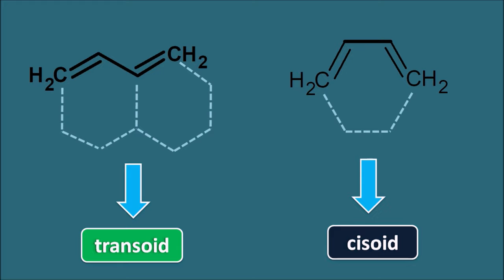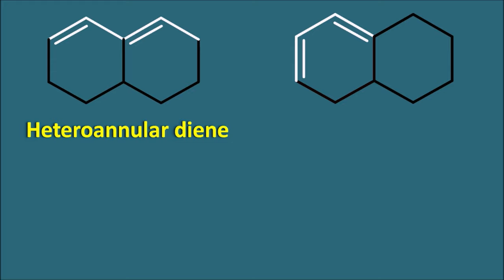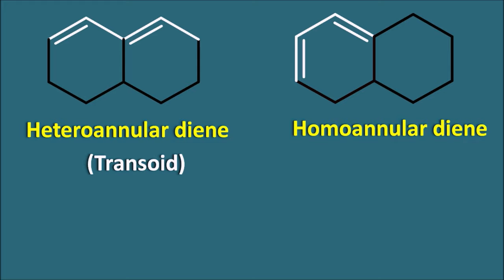Similarly, for the second structure, if we want to incorporate the double bonds into a cyclic structure we add chemical bonds so that both double bonds are incorporated in the same cycle — since it comes from the cis conformation, this is called a cisoid compound. Cyclic dienes can thus exist in two different conformations: transoid and cisoid. In the transoid compound, the two double bonds are in two different rings, so this is called a heteroannular diene — hetero means different and annular means rings. In the cisoid compound, the two double bonds are in the same ring, so it is called a homoannular diene.